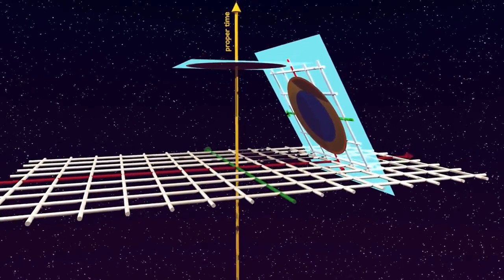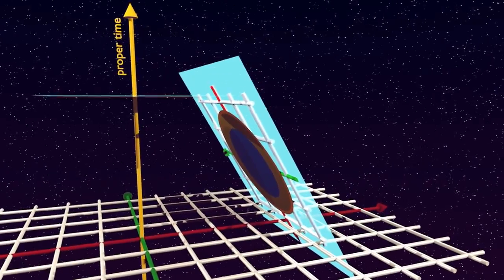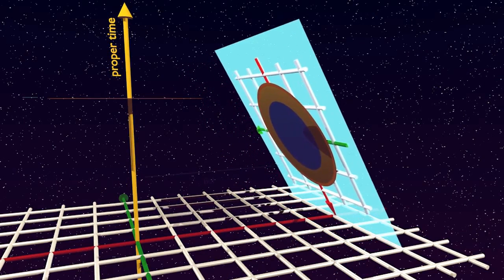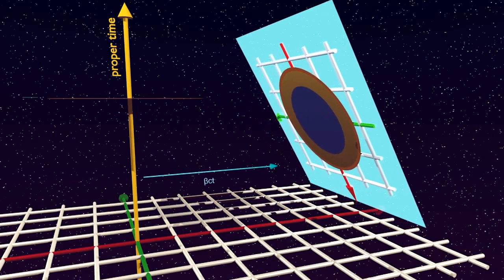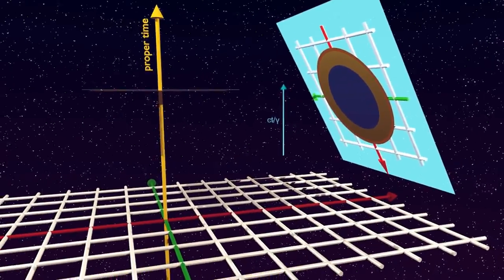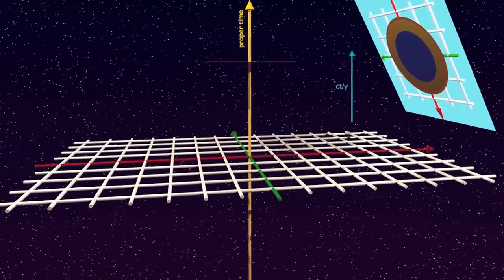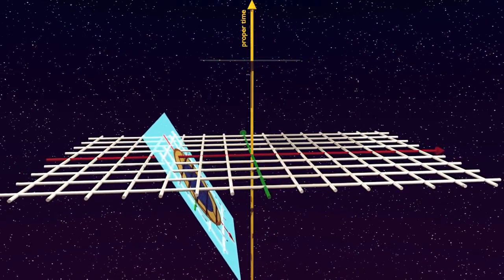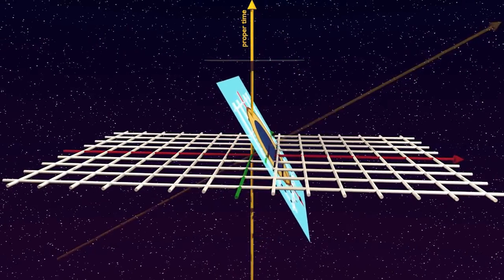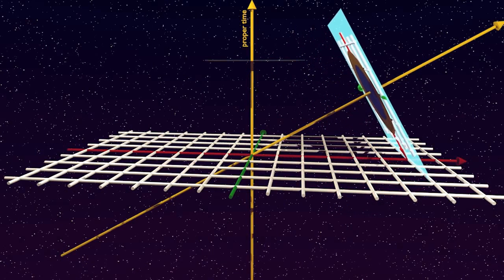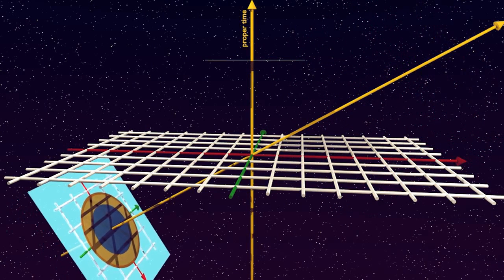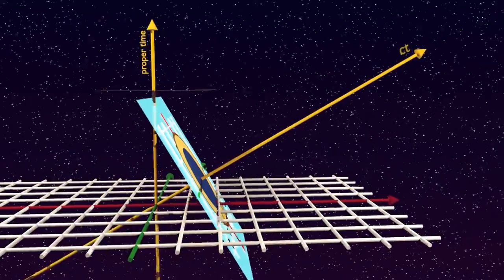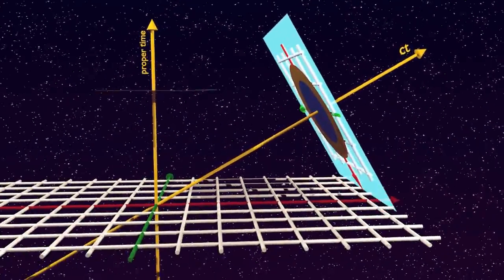If we follow consecutive proper time diagrams built for consecutive times in the stationary frame, we see the moving lab sliding both along the direction of motion at the rate of its relative velocity, and in proper time at a time-dilated rate. The two displacements compound in such a way that the overall direction of motion in space-time is exactly perpendicular to the tilted plane of the moving lab itself. The rate of motion along this space-time trajectory turns out to be exactly the normal time rate as seen in the stationary frame.